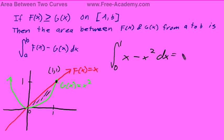We evaluate this. This is going to give us 1 half x squared minus 1 third x to the third, evaluated between 0 and 1. This gives us 1 half minus 1 third, which equals 1 sixth.